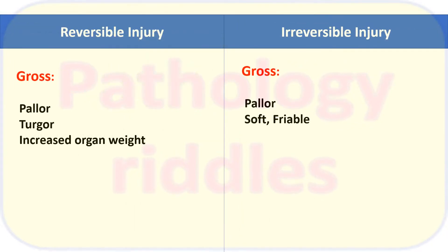Grossly, in cases of reversible injury there will be pallor, turgor — that is rigidity — and increased organ weight, because the cell has the inability to maintain fluid homeostasis. In cases of irreversible injury there will be pallor and the organ will become soft and friable.